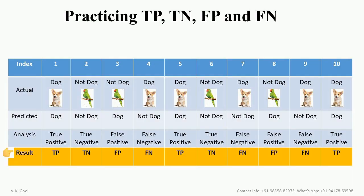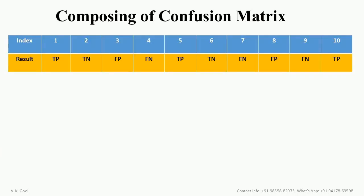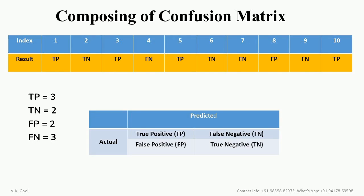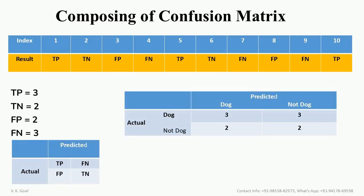All the results are compiled in the last row as final results. Now it's time to compose the confusion matrix. For this, let's count the TP, TN, FP, and FN. So, TP comes out to be 3, TN is 2, FP is also 2, and FN is 3. Now TP, TN, FP, and FN are arranged in a confusion matrix as shown here. And here is the confusion matrix for the classifier's prediction under test.